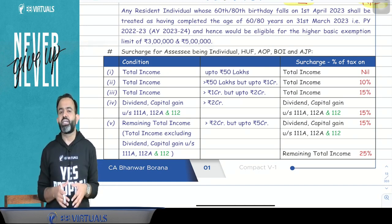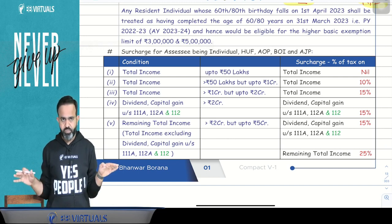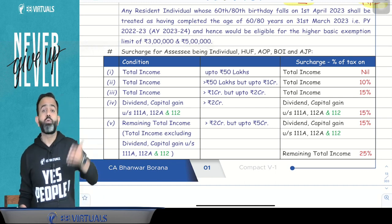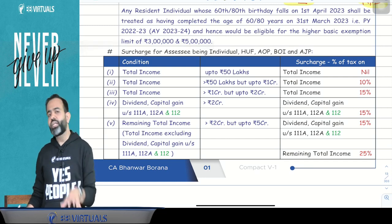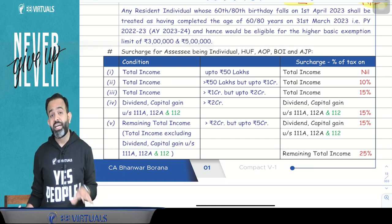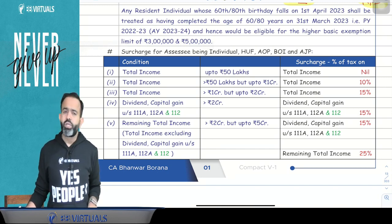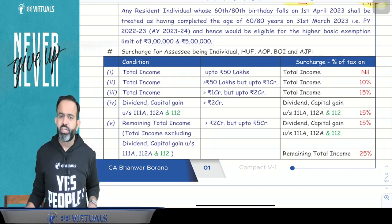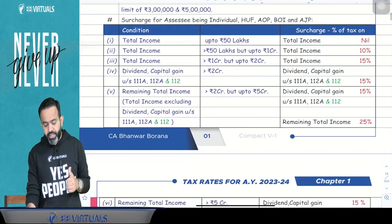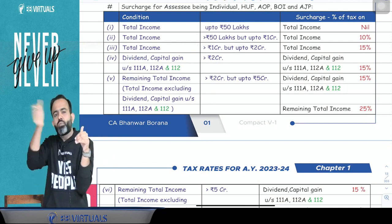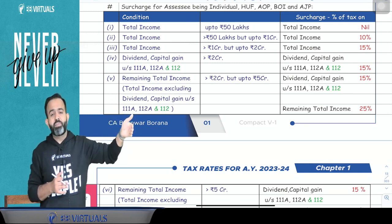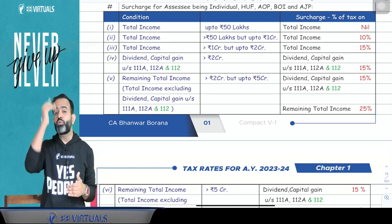If your total income — that is net taxable income — is up to ₹50 lakh, then surcharge is not applicable. If total income is more than ₹50 lakh up to ₹1 crore, surcharge is applicable at 10%. If total income is more than ₹1 crore up to ₹2 crore, surcharge at 15%. More than ₹2 crore up to ₹5 crore, surcharge at 25%. Total income more than ₹5 crore, surcharge at 37%.